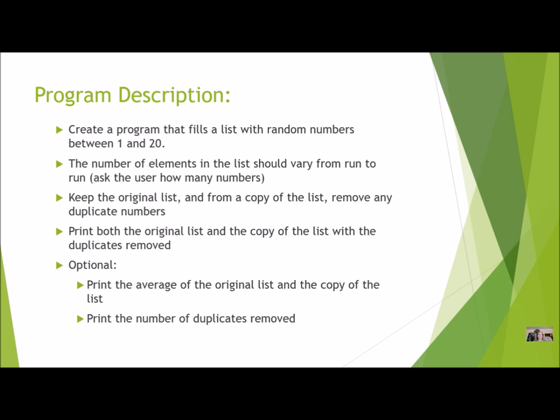You're going to create a program that fills a list with random numbers between 1 and 20, inclusive. The number of elements in the list should vary from run to run, so you're going to ask the user how many numbers — sometimes it might be 10, 20, 30, 40, anything. Once you have the original list, keep it because you're going to print it at the end, but also make a copy of the list. In this copy, you're going to remove any duplicate numbers. Then you're going to print both the original and the copy so you can do a comparison.